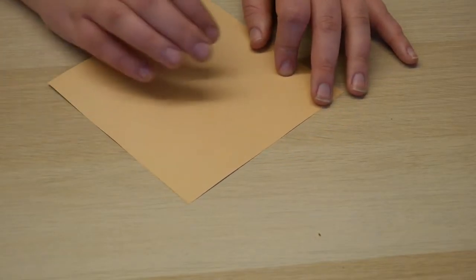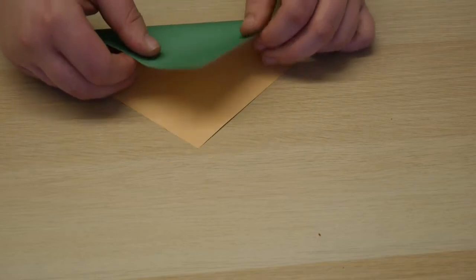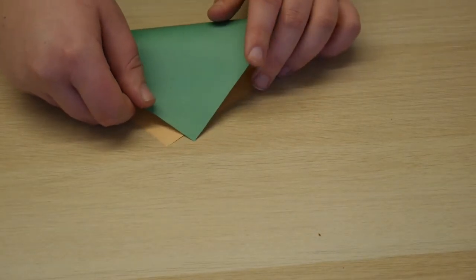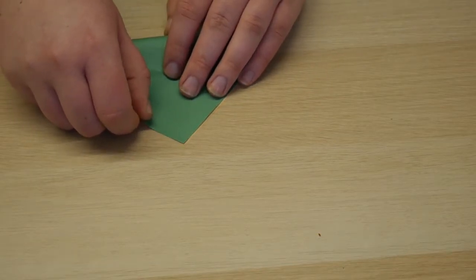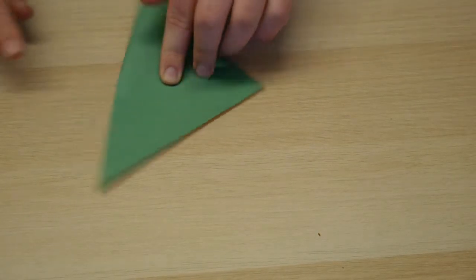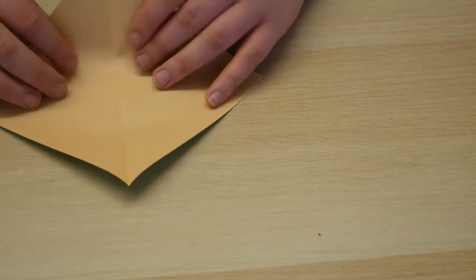So what we want to do with this square piece of paper is we want to turn it into a diamond. So from our previous videos you might know how to already do this, but if you're new I'll just show you really slowly.